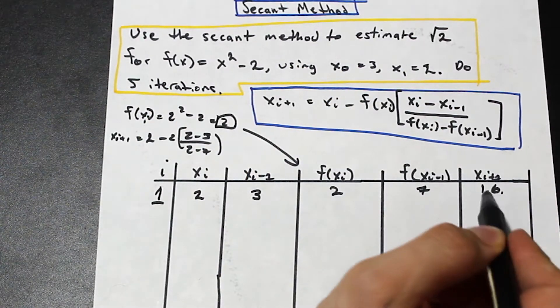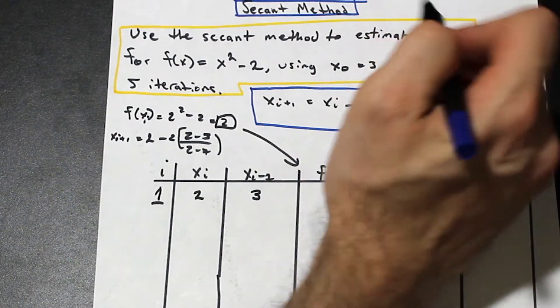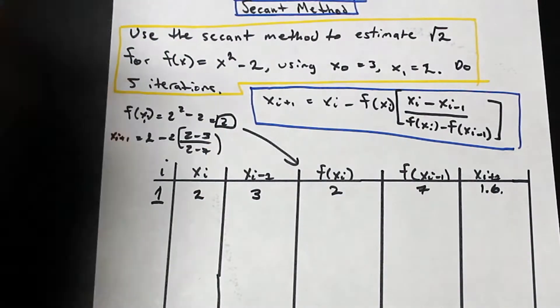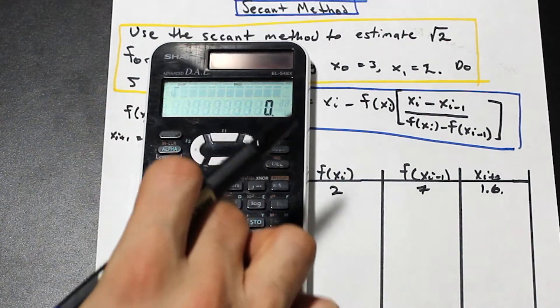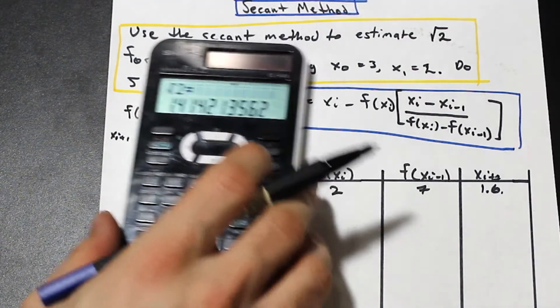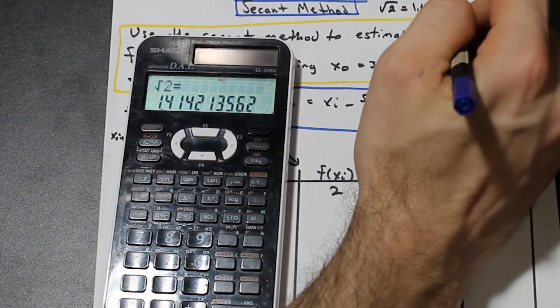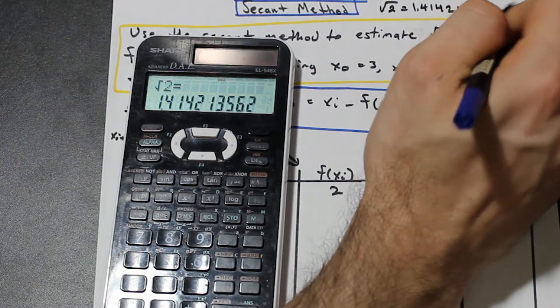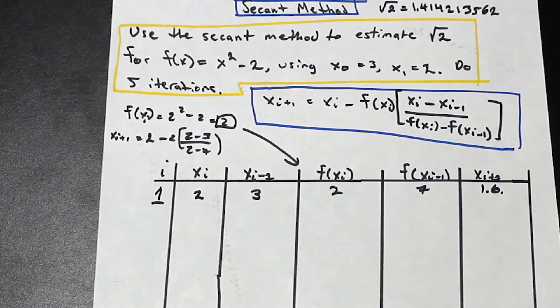But we can get closer than that. The real answer is actually, if we go ahead and calculate it, so if we have root 2, we have 1.414213562. In this course you always want to take the maximum number of decimal places.